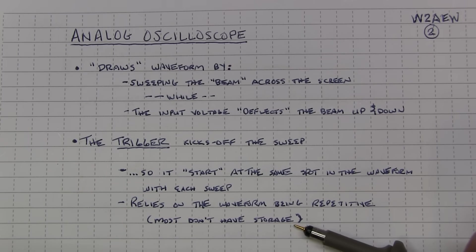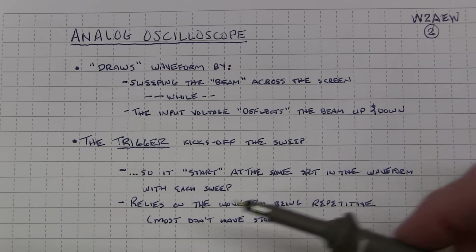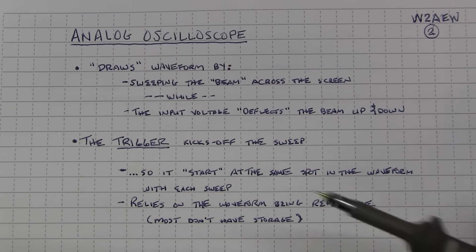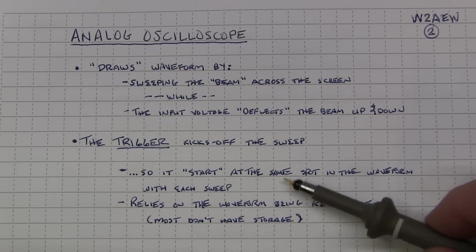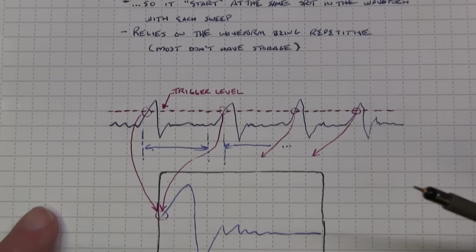And this relies on the fact that the waveform is going to have some repetitive nature to it. Because most analog scopes don't have storage, it can't show you a single shot, a single waveform. So we're relying on the fact that the waveform is repeating itself and that we're going to start drawing that waveform at the same location in time.